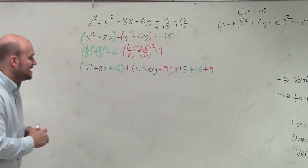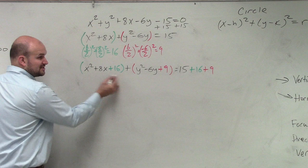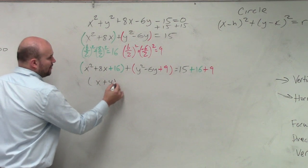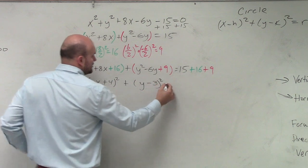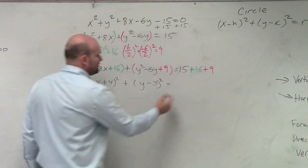I'm not going to factor them down, I'm just going to factor them for you. So this is x plus 4 squared plus y minus 3 squared equals 40.